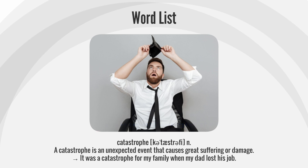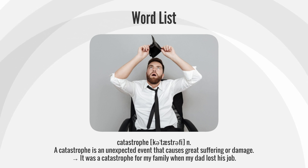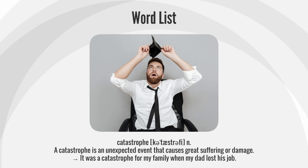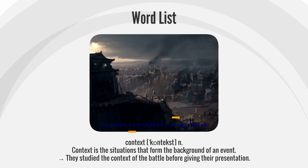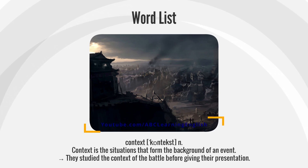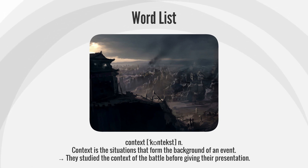Catastrophe — a catastrophe is an unexpected event that causes great suffering or damage. It was a catastrophe for my family when my dad lost his job. Context — context is the situations that form the background of an event. They studied the context of the battle before giving their presentation.